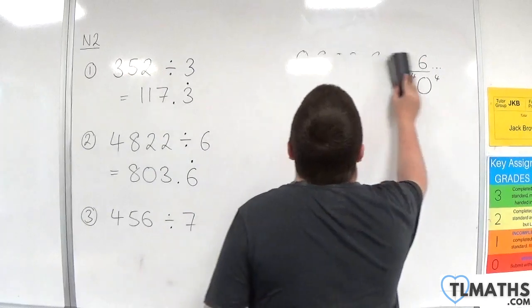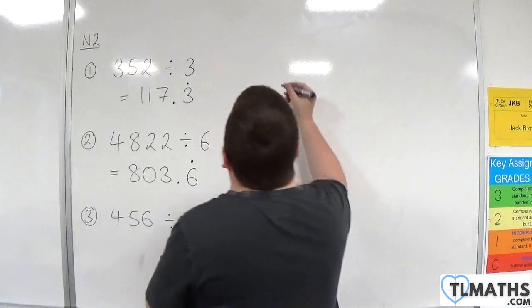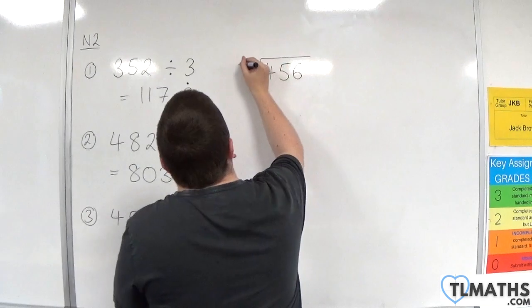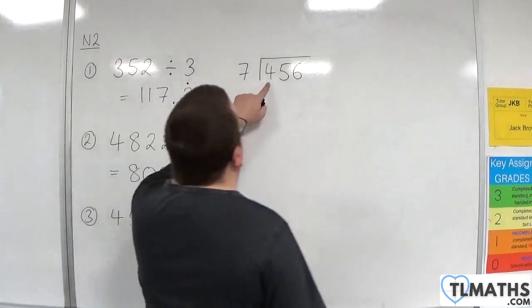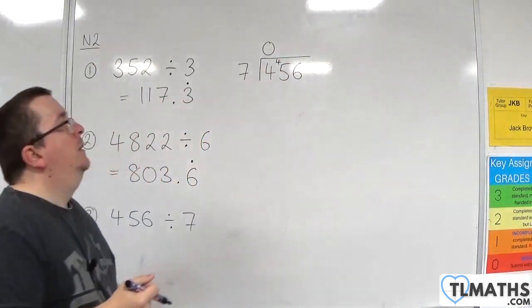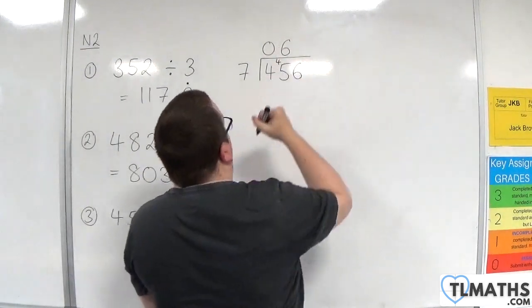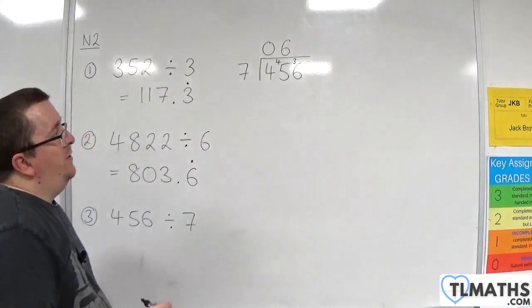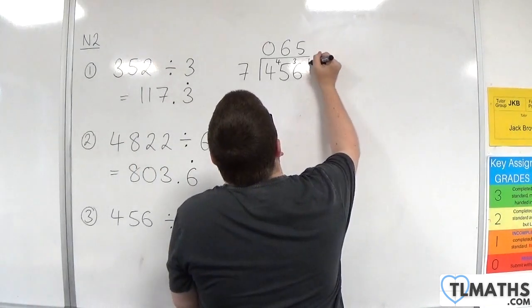Last one. 456 divided by 7. I'm going to give myself a little bit of space for this one. 7s into 4 go 0 with 4 left over. 7s into 45 go 6. 6 times 7 is 42, so I've got 3 left over. 7s into 36 go 5. 5 times 7 is 35 with 1 left over.